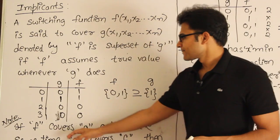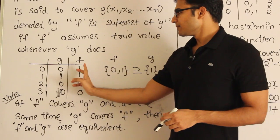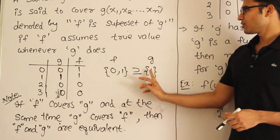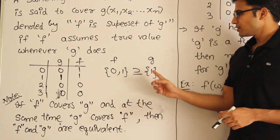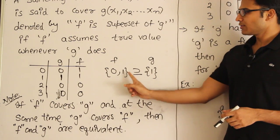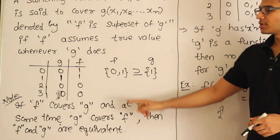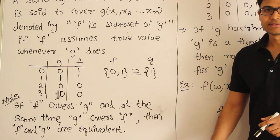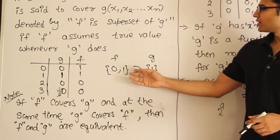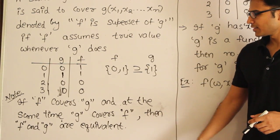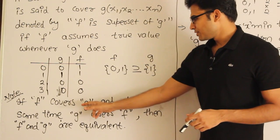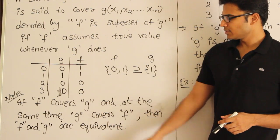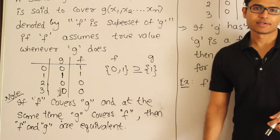Now if f covers g, it means that f is a superset of g. And at the same time, if g covers f, it means that g is a superset of f. When will that happen? When both are actually equal sets. Then we can say that both are equivalent. So if f covers g and g covers f, then f and g are called equivalent.